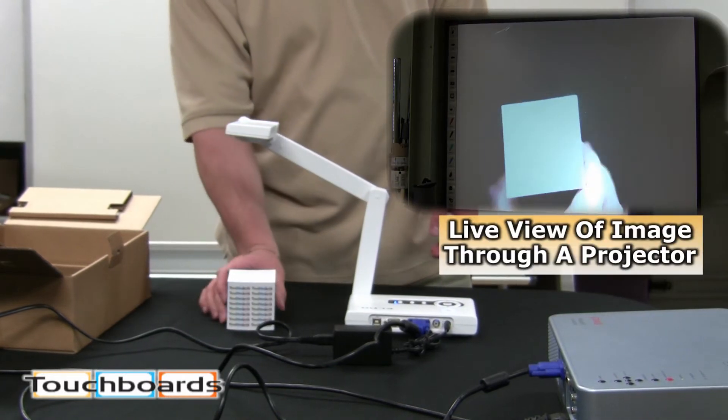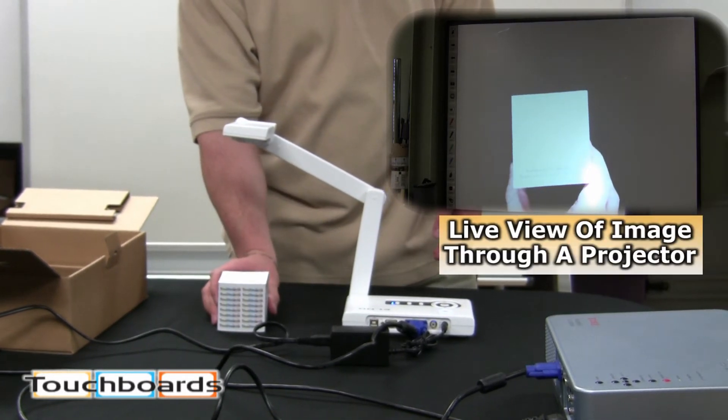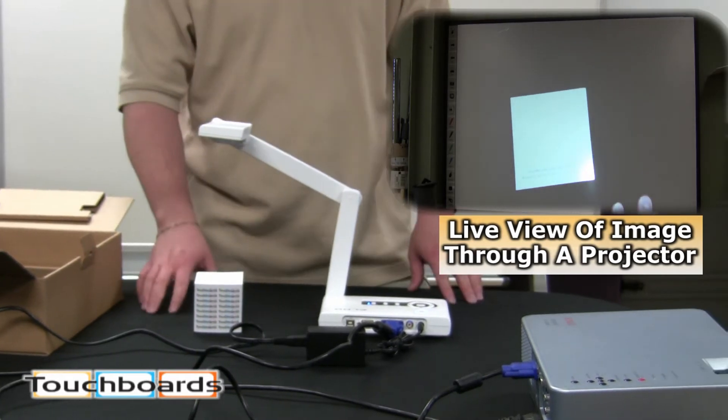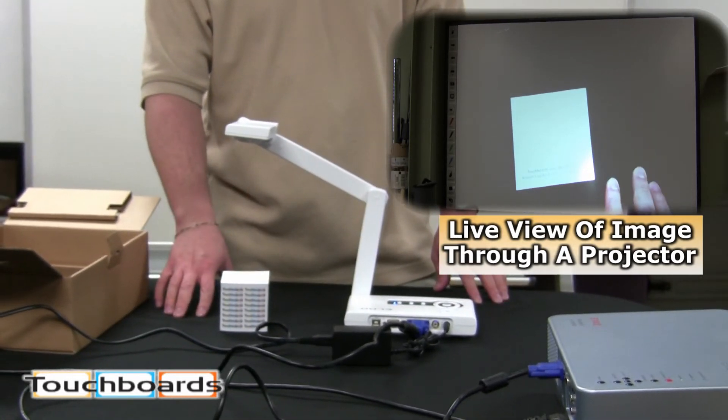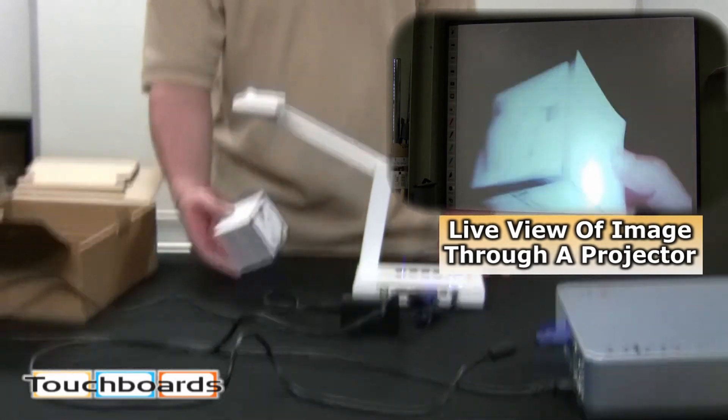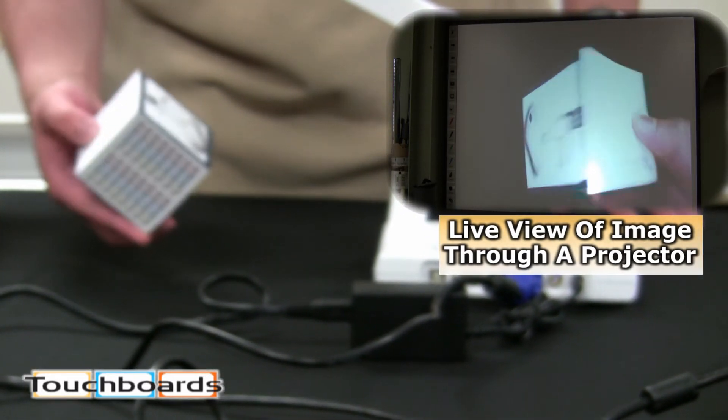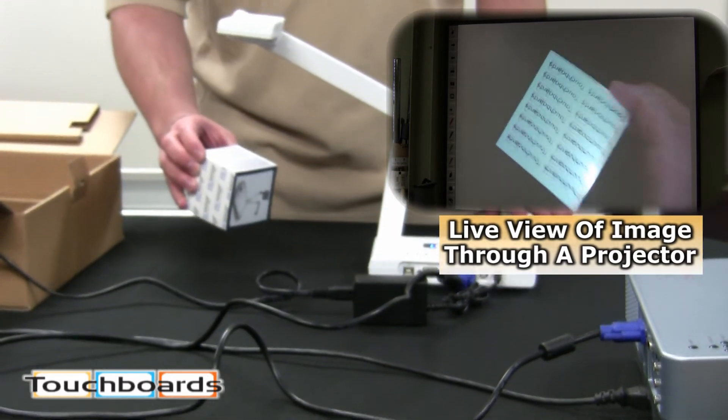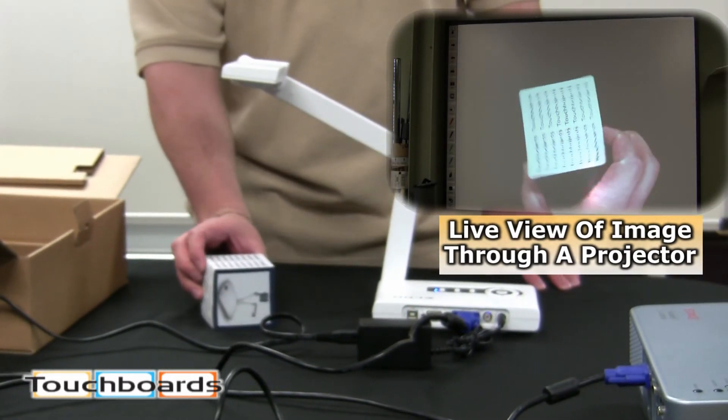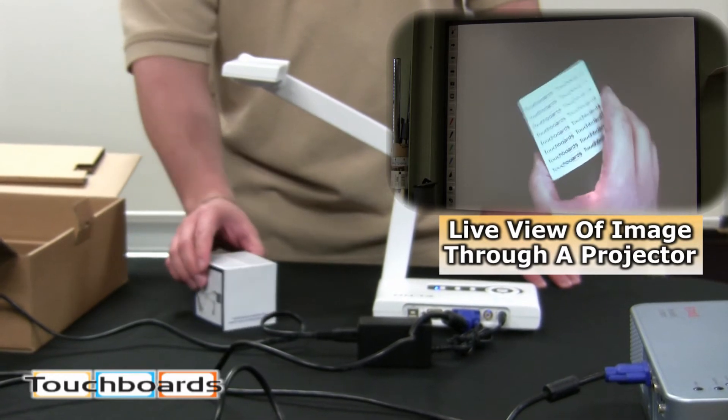So as you can see, I have my little notepad here I put under the camera. Now, you can use any paper, magazines, books, or any three-dimensional object just like this. It does show video. As you can see, I am moving it around. It has autofocus, so you can place it down. You don't have to worry about focusing anything.